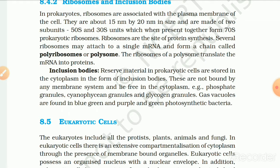Inclusion bodies — reserve food material in prokaryotic cells — are stored in the cytoplasm. These are not bound by any membrane system and lie free in the cytoplasm. Examples include phosphate granules, cyanophycean granules and glycogen granules. Gas vacuoles are found in blue-green and purple and green photosynthetic bacteria.